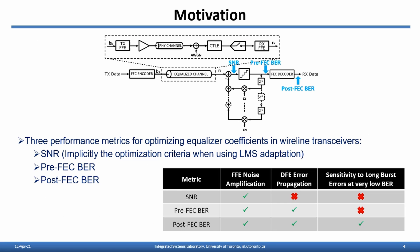There are three popular performance metrics for optimizing equalizer coefficients in wireline transceivers. The first is signal-to-noise ratio, which is also implicitly the optimization criterion when using LMS adaptation to find FFE coefficients. The second is the pre-FEC bit error rate, which is the raw bit error rate before correction by forward error correction codes. Lastly, we have the post-FEC bit error rate, which we ultimately care about in wireline system design. Since SNR is applied to the quantizer input, only FFE noise amplification is considered, while DFE error propagation and burst errors are not included. Pre-FEC BER is measured at DFE output but before FEC; it does consider DFE error propagation, but is not sensitive to long burst errors at very low bit error rates. Post-FEC BER is the FEC-corrected bit error rate at the final output node, which is able to address all three issues.